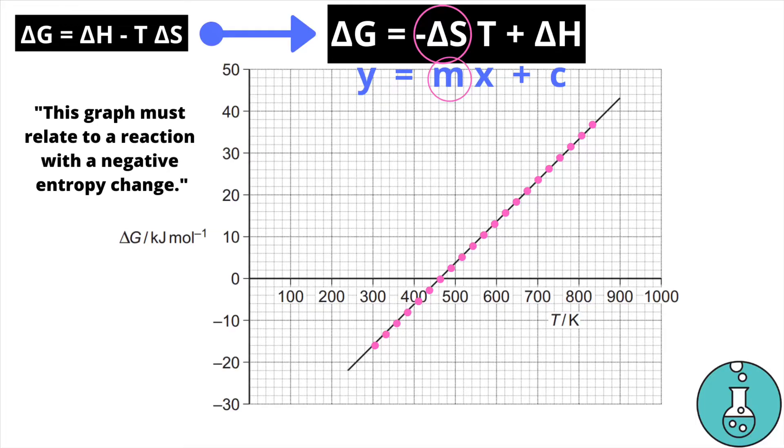You also need to be mindful that your gradient, your minus delta S, will come out in units of kilojoules per kelvin per mole because that's how it's represented in the delta G calculation.